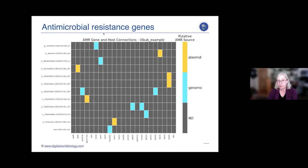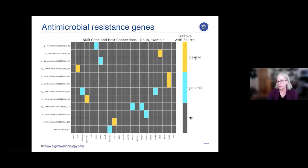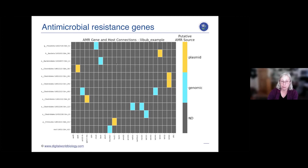By searching DNA sequences against a database, we can also find that Little Bub's microbiome contains antimicrobial resistance genes — AMR genes. The color key shows yellow if the gene is on a plasmid, and blue if it's found on the chromosome. Some bacteria have these resistance genes in their genome, some have them on plasmids, and some have more than one resistance gene.